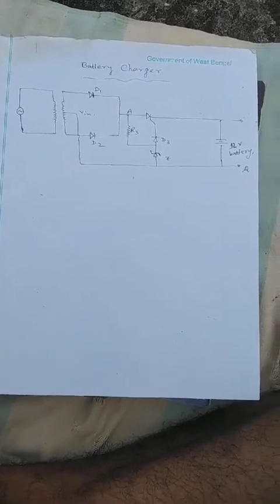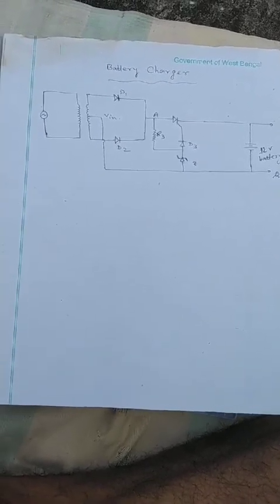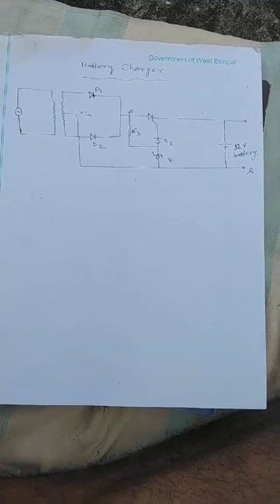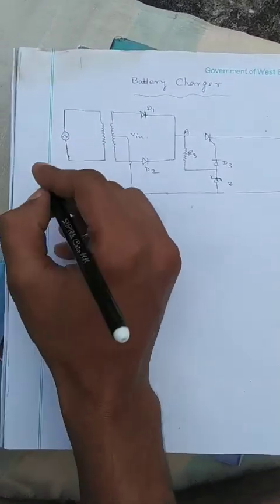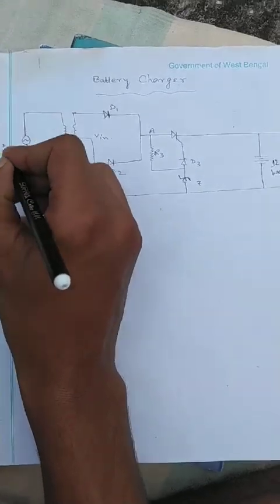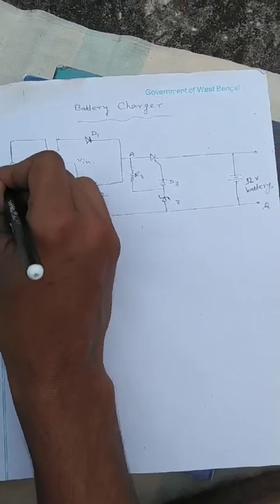Hello friends, good morning everyone. Today I will discuss another topic: the battery charger. In our daily life, the battery is also used in mobile phones and PC laptops. We use a battery charger, and there is a circuit diagram for this. The circuit has an AC supply and a 12 volt battery.